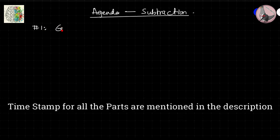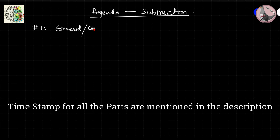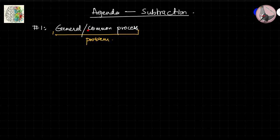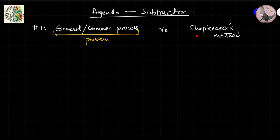The first part covers the general common process by which we do subtraction. Then we'll figure out the problem with this common method and why it is slower than other methods. We'll also compare it with what shopkeepers use — a totally different method — which is very handy, so we shouldn't shy away from it.